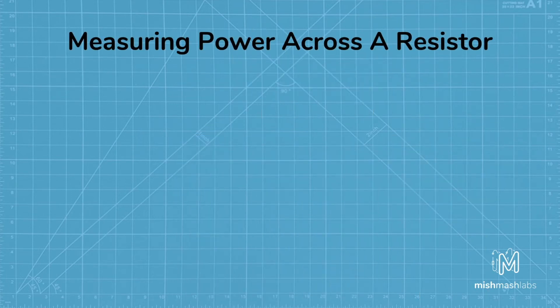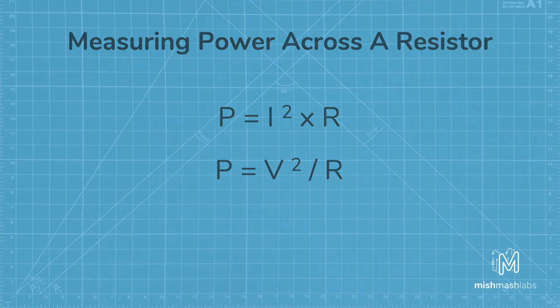A resistor's power rating can be checked on the packaging provided or in the datasheet. We can calculate the power rating required by using Ohm's law in the form of power equals current squared by the resistance R. If you know the voltage across the resistor, the power can be calculated by squaring the voltage and dividing it by the resistance R.